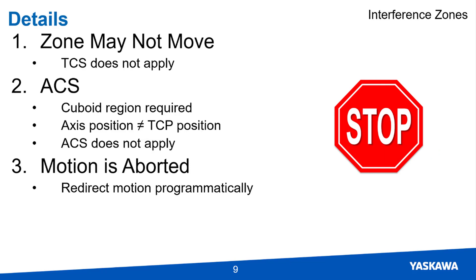The only action that can result automatically from the Y_ActivateIZ block is to abort motion. It does not redirect the TCP around the interference zone, although this may be accomplished programmatically.